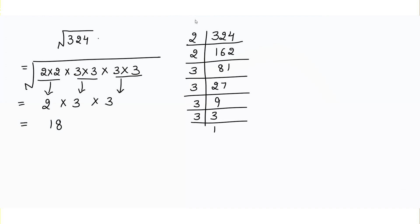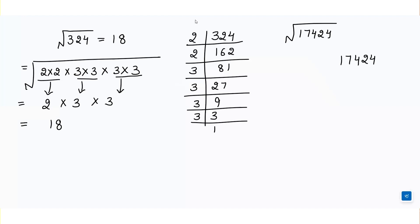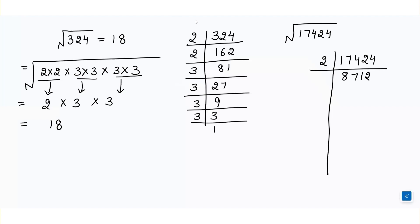Similarly, if I have to find the square root of a bigger number — for example, the square root of 17,424 — I will find out its prime factors. Since this number is divisible by 2, we divide it by 2 to get 8,712.